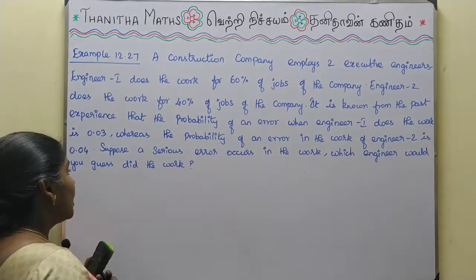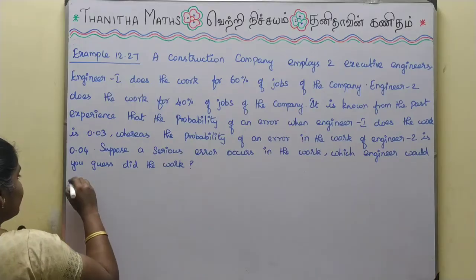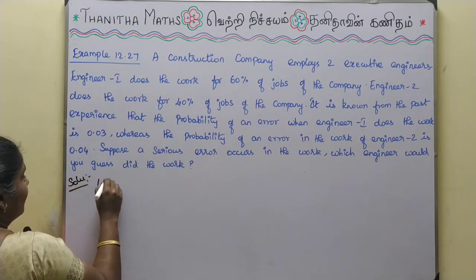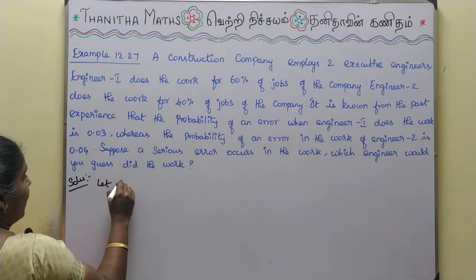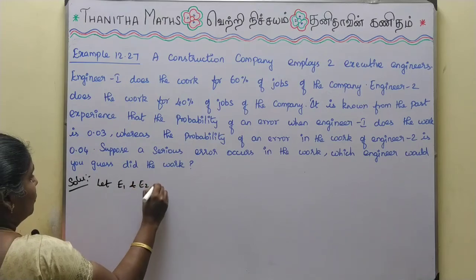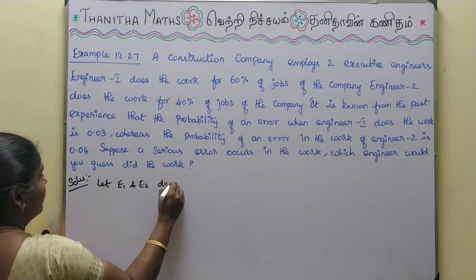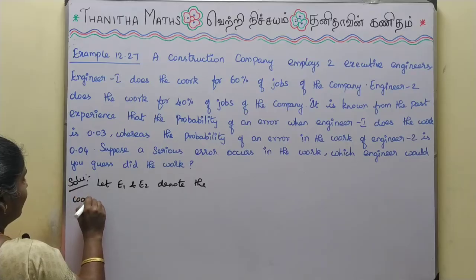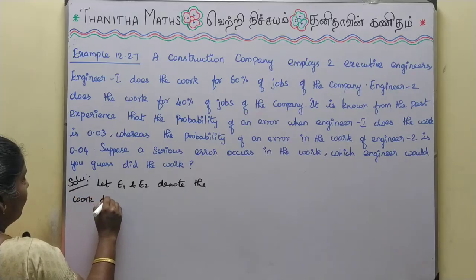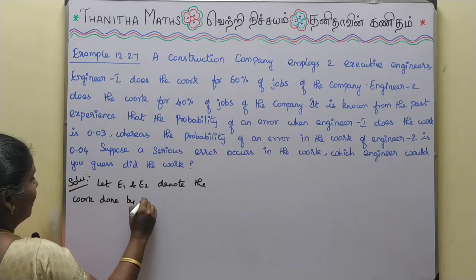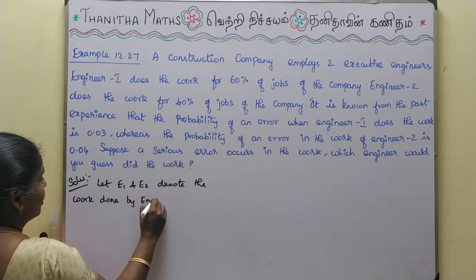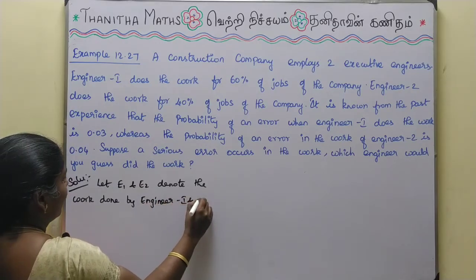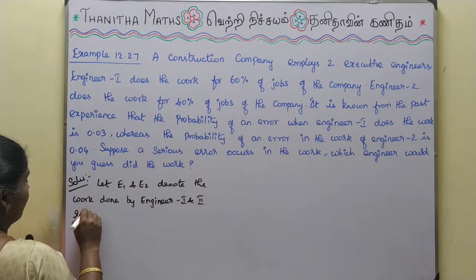Let's see. Let E1 and E2 denote the work done by Engineer 1 and Engineer 2 respectively, and let B denote the event of an error in the work.